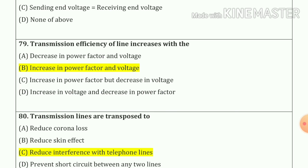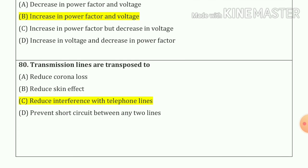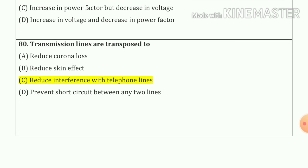Question number 79: transmission efficiency of a line increases with increase in power factor and voltage. Question number 80: transmission lines are transposed to reduce interference with telephone lines — option number C.